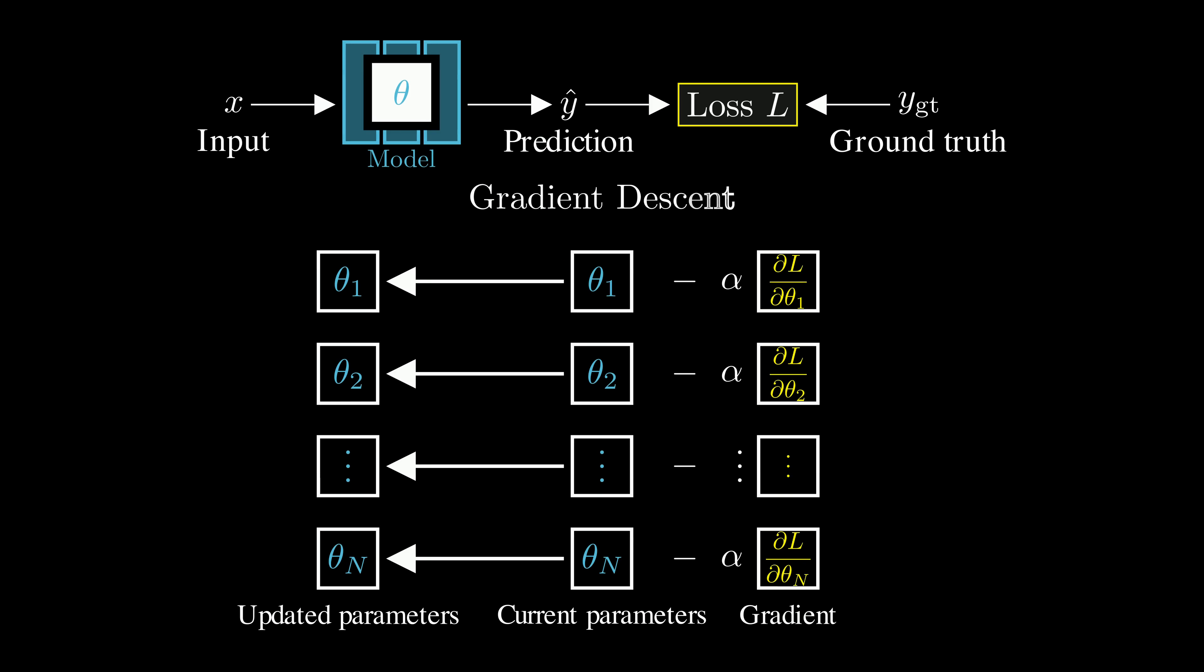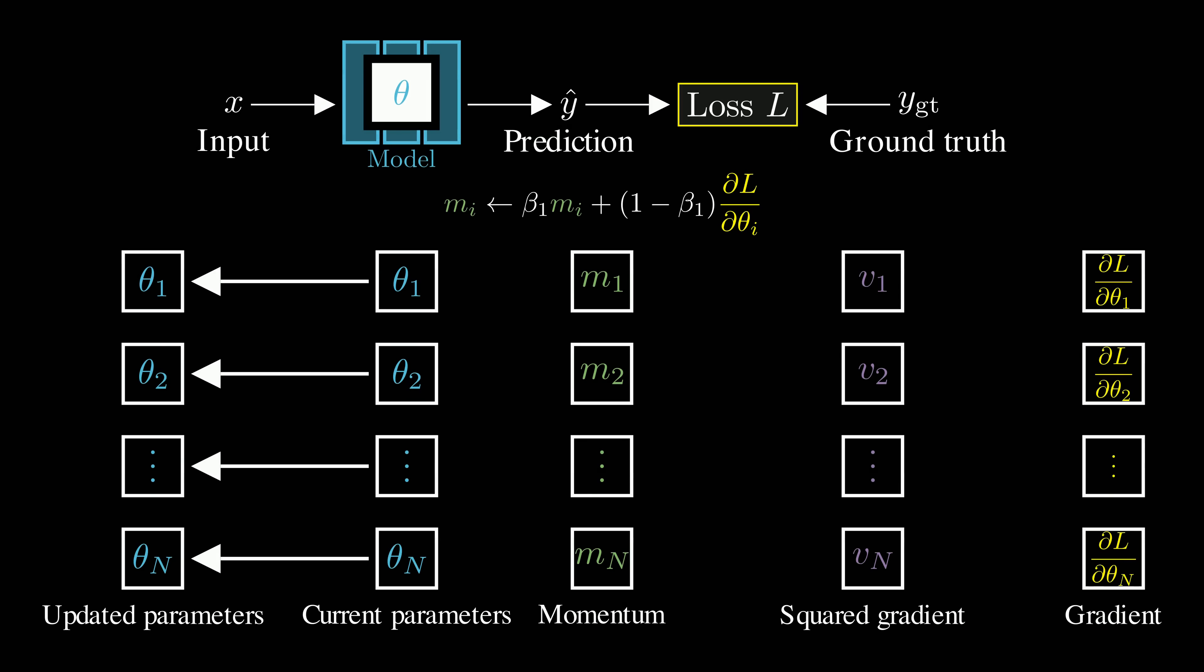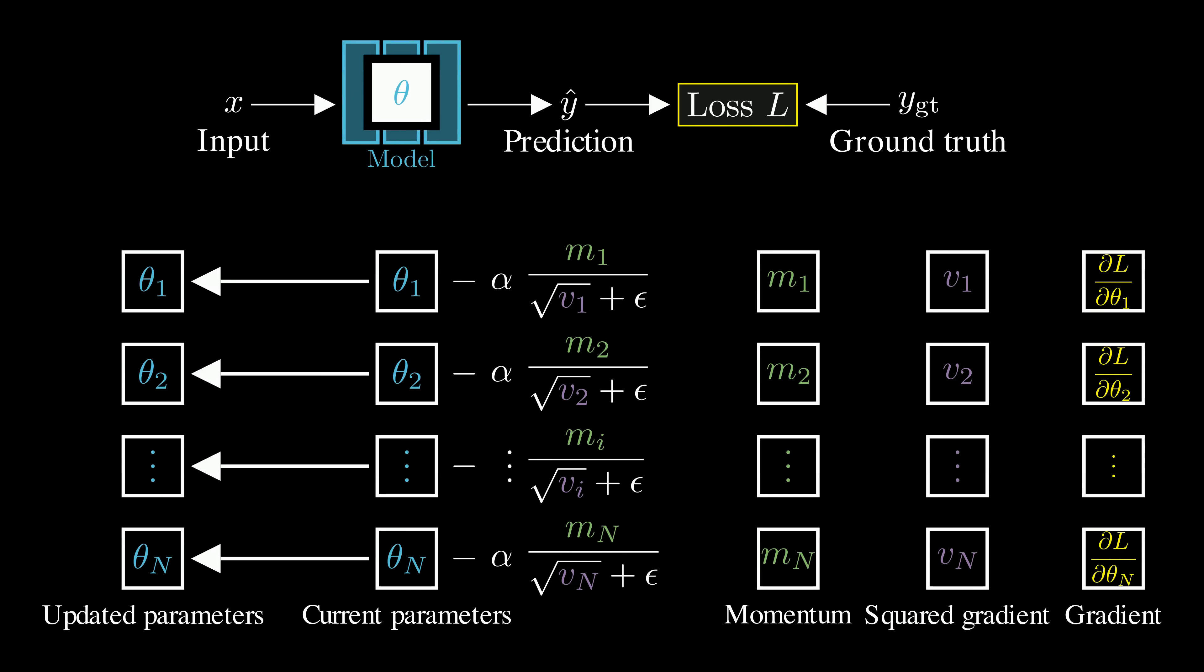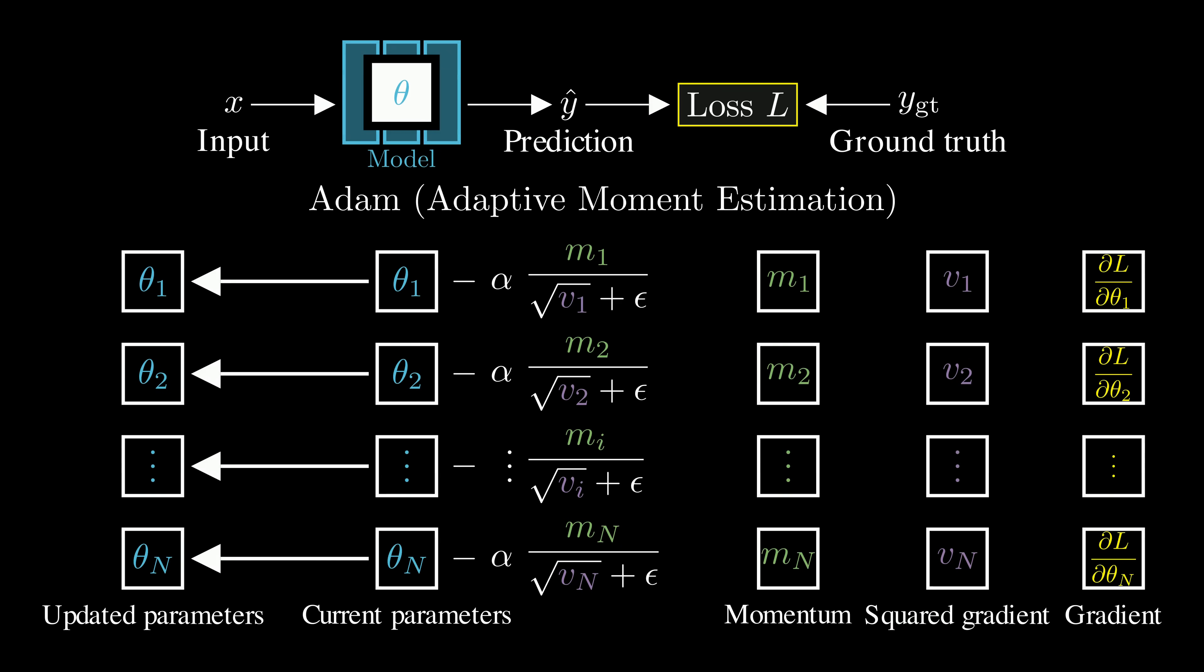This is known as gradient descent. Adam builds on gradient descent, but maintains two exponential moving averages of variables. One for the past gradients themselves, called momentum, and another for the square gradients. Rather than updating parameters directly from the raw gradients, Adam combines the momentum with an adaptive scaling factor derived from the square gradients. This allows Adam to converge more quickly, and often achieve better results than standard gradient descent.